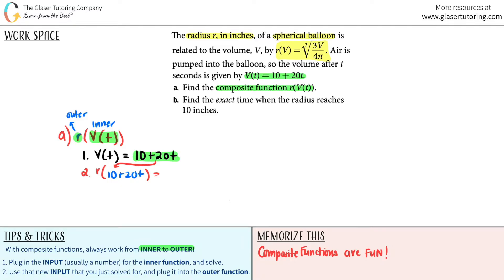So in this case, I'm going to say it's the cubed root of 3 times, not V anymore, it's what we solved before. So it would be 3 times (10 plus 20t). And that's all over 4π. That's the answer to A.